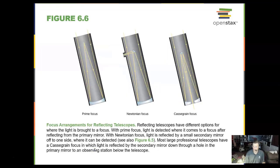You can have different areas of focus in a reflecting telescope. You can have it coming out of the aperture, the eyepiece, or a focus within the mirror itself.